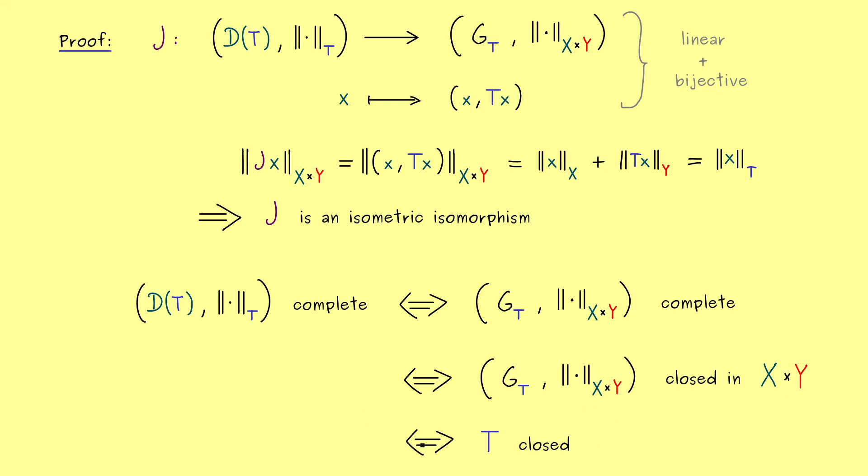So in summary we get a whole chain of equivalences here that show that the completeness of this space is equivalent to the closeness of the operator. And with that we have it.